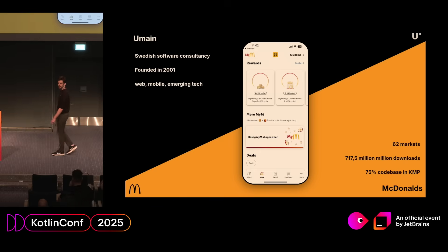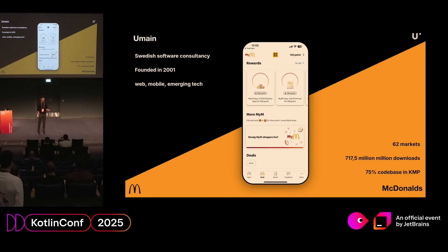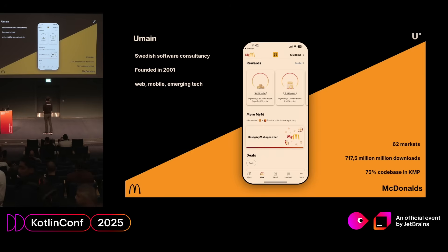UMaine - you might not have heard about us before, but we are a Swedish software consultancy. We were founded in 2001. We do a lot of things - mostly web, mobile, some cool emerging tech like AR, VR, AI, and other stuff. We have a lot of clients, big and small, but one of our big ones is McDonald's.